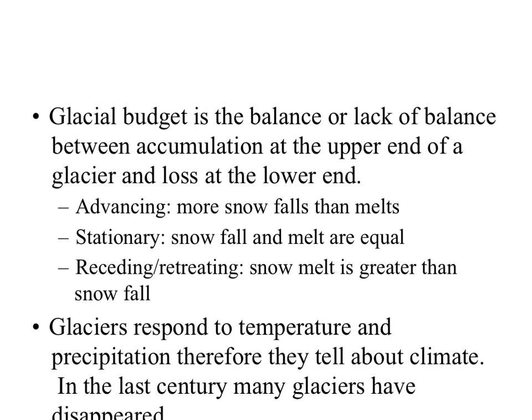Glacial budget works just like a financial budget. How much money you got? That's a set amount. If I spend money, I'm going to have less — my savings is going to recede. If I get money, then my bank account is going to increase, advance, grow. And if the amount of money coming into my bank account is the same amount I spend, then my budget is going to stay stationary.